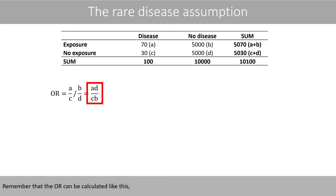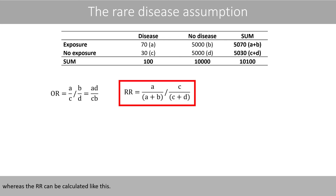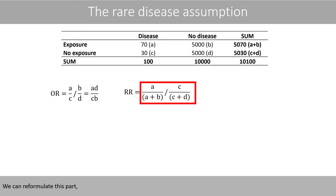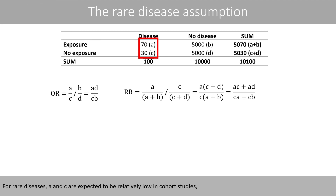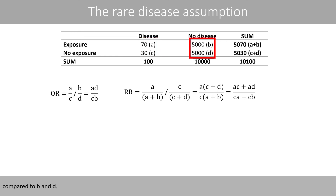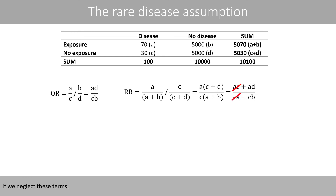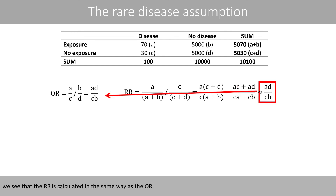Remember that the odds ratio can be calculated as A times D divided by B times C, whereas the relative risk can be calculated differently. We can reformulate the relative risk expression. For rare diseases, A and C are expected to be relatively low in cohort studies compared to B and D. These two products are therefore much smaller compared to the others. If we neglect these terms, we see that the relative risk is calculated in the same way as the odds ratio.